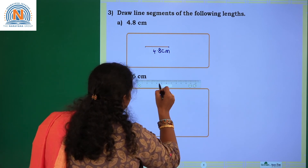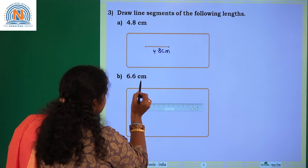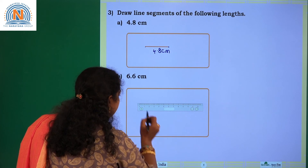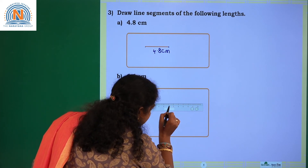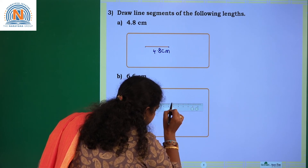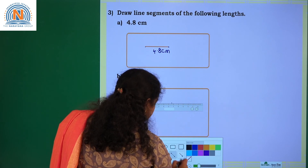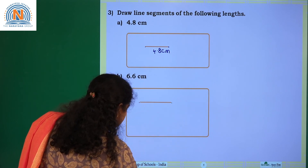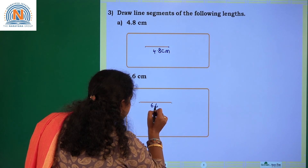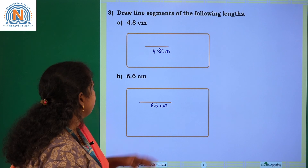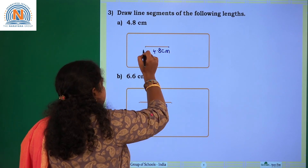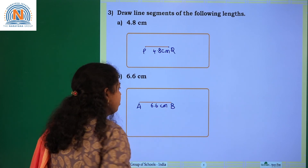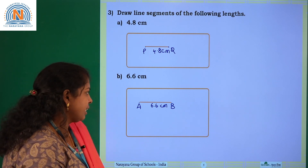For the next one, 6.6 centimeters — consider the ruler, mark two points: initial point at 0 and 6.6 centimeters, which is one small division after 6.5. Draw a line joining these two points and name this line as 6.6 centimeters length. You can name it PQ or AB — any alphabet of your choice for the line segment.